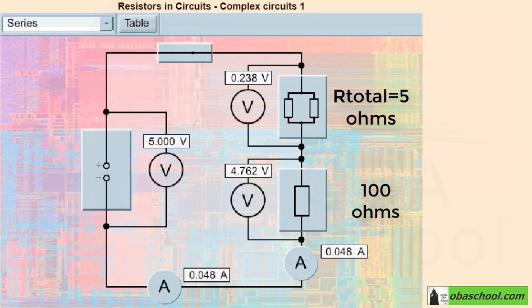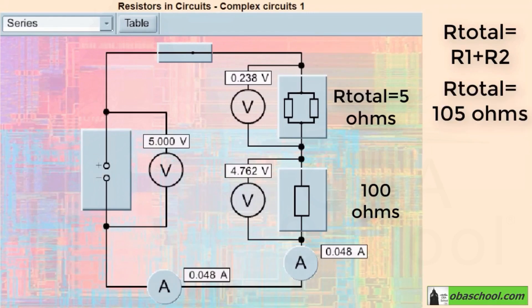Well, using the equation for resistors in series, R total equals R1 plus R2, we get a value of 105 ohms. Great job everyone!